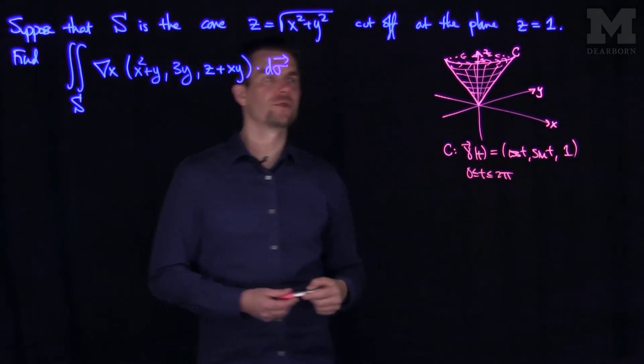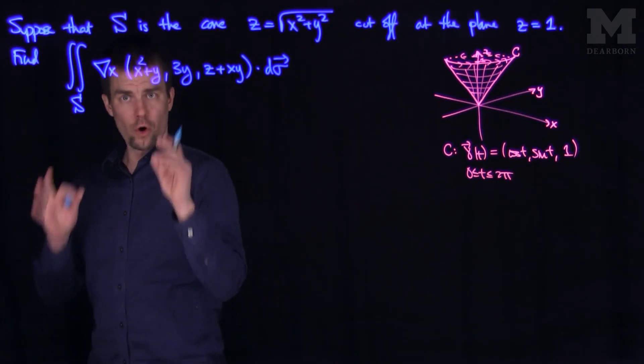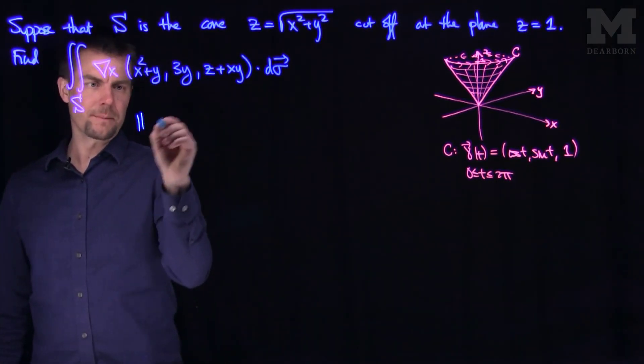And so now we're in a position to apply Stokes' Theorem because you're finding the flux of a curl over an open surface. So the surface over here is open. So by Stokes' Theorem,